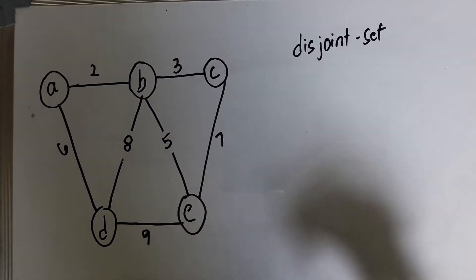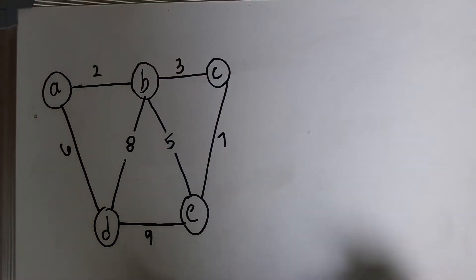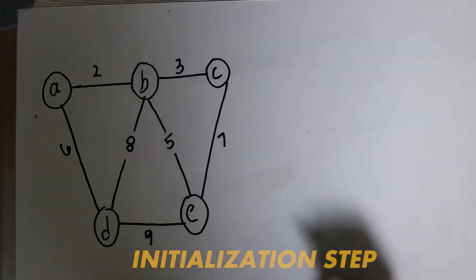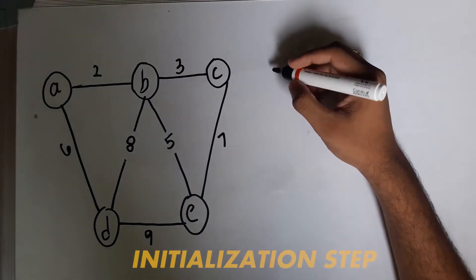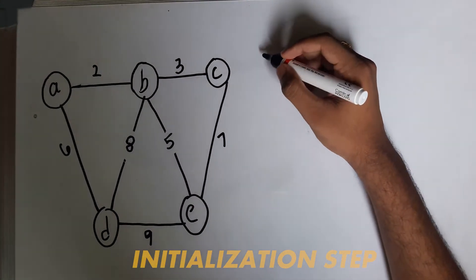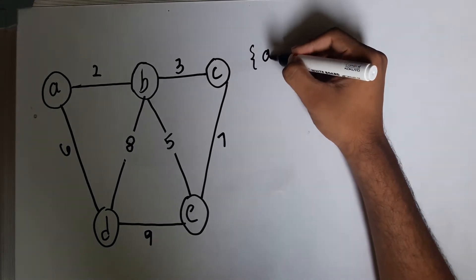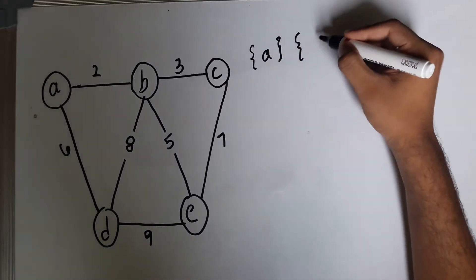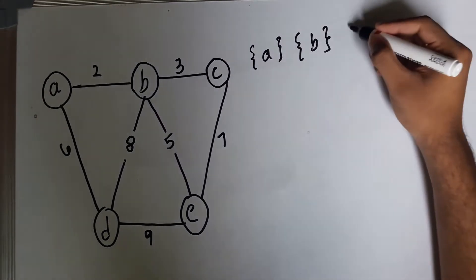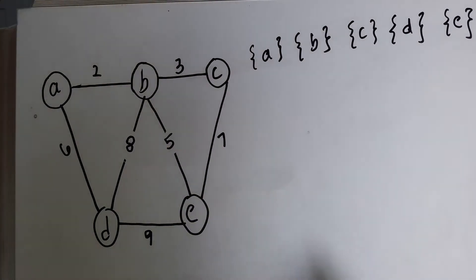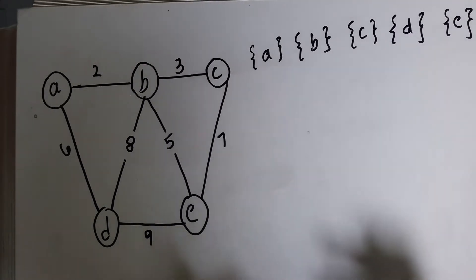The disjoint set data structure is used here in order to decrease time complexity. The first step of Kruskal's algorithm is to initialize the disjoint set, which involves creating a different set for each element in the graph. We also have a global set or global array which holds all the edges that are part of the minimum spanning tree.